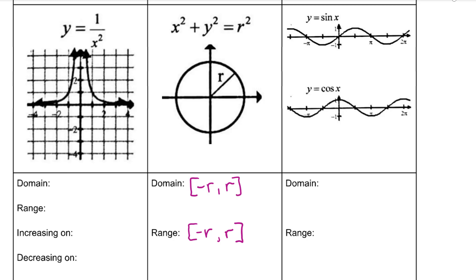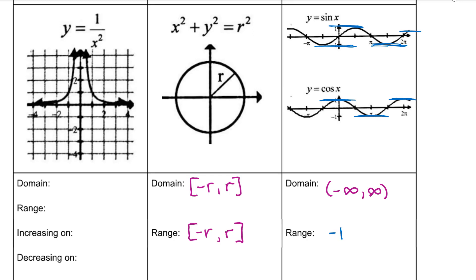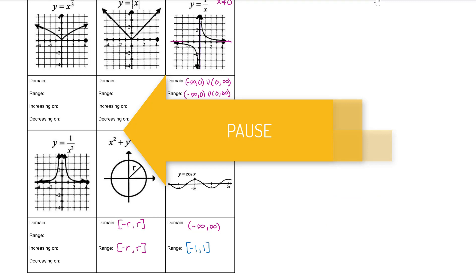The domain for both sine and cosine is negative infinity to infinity — the graph continues forever in both directions. The range for both is [−1, 1], since the graph does not go below −1 or above 1, and these are included values. Pause the video and complete your responses for y = x^(2/3), y = |x|, and y = 1/x², then press play to check your answers.